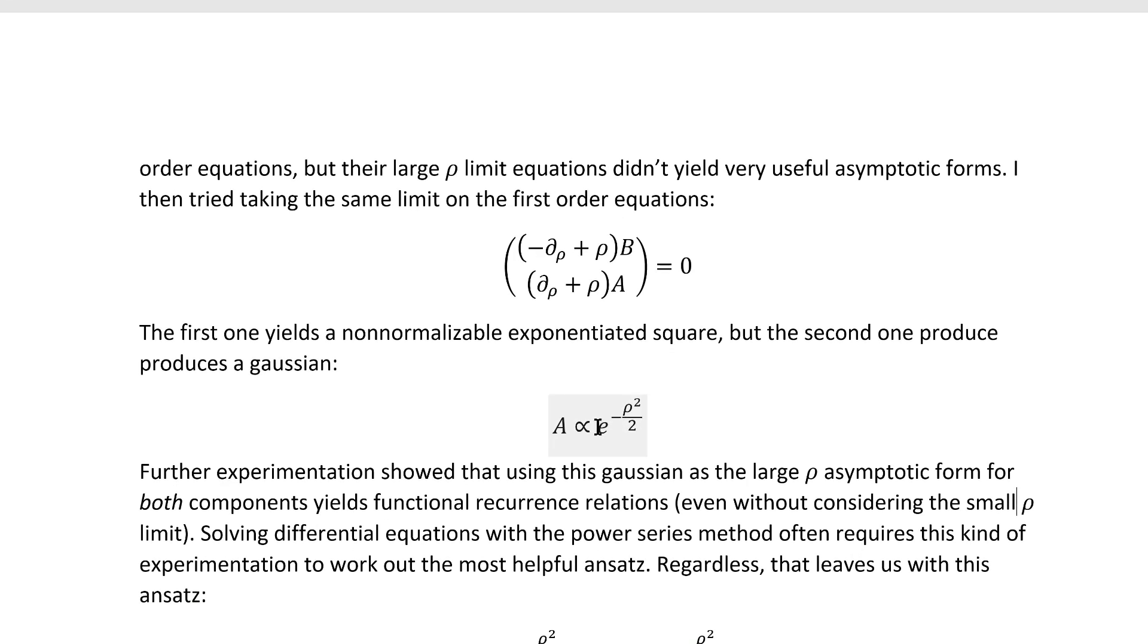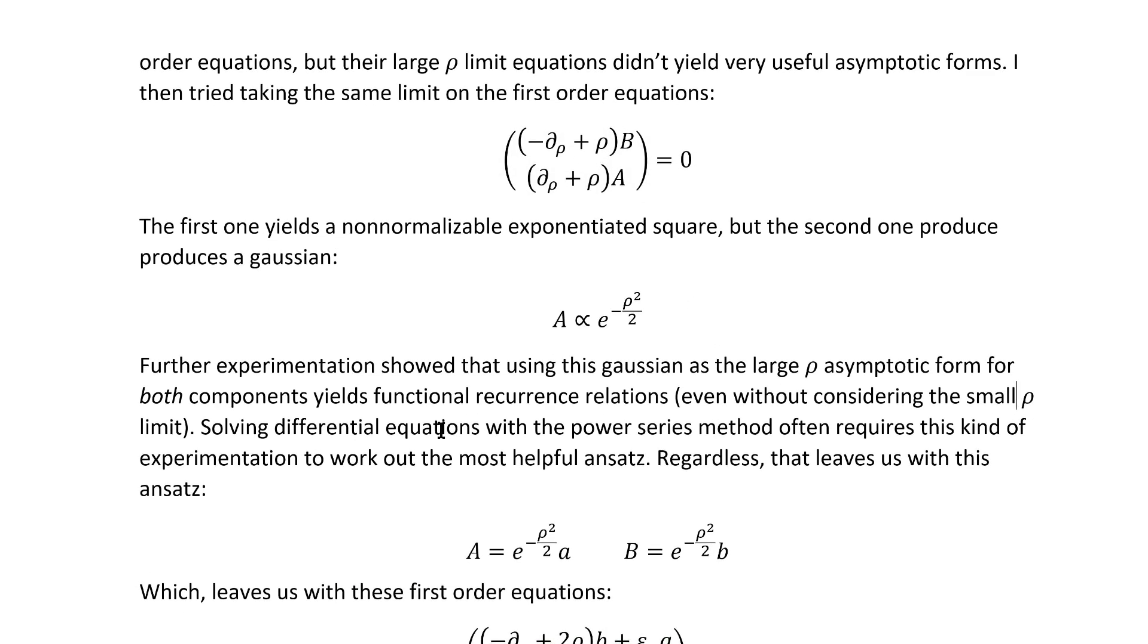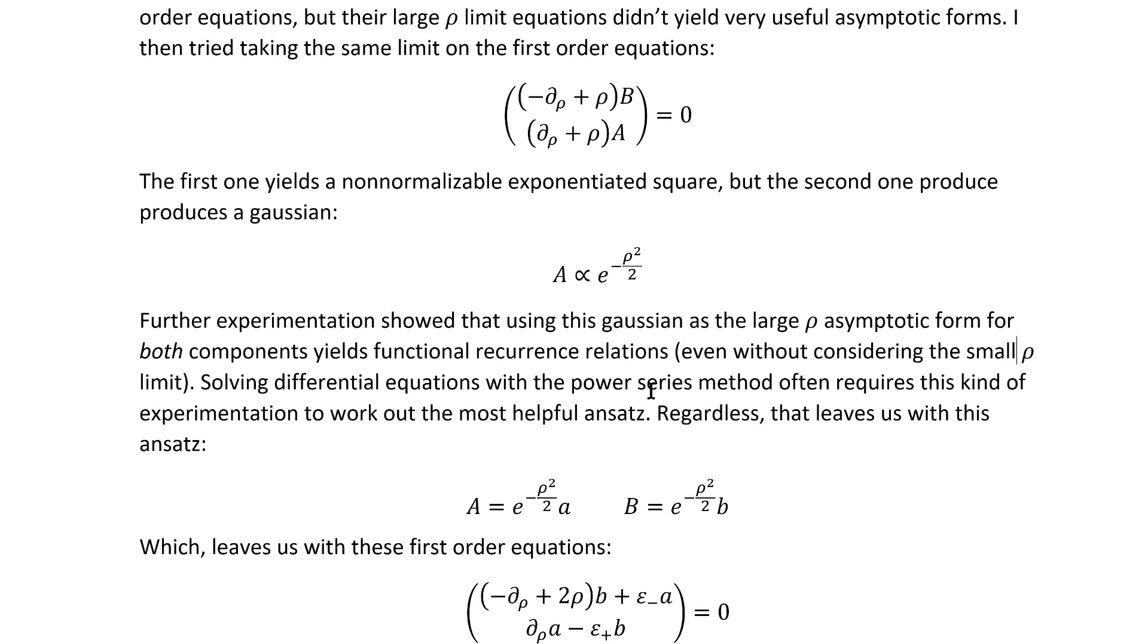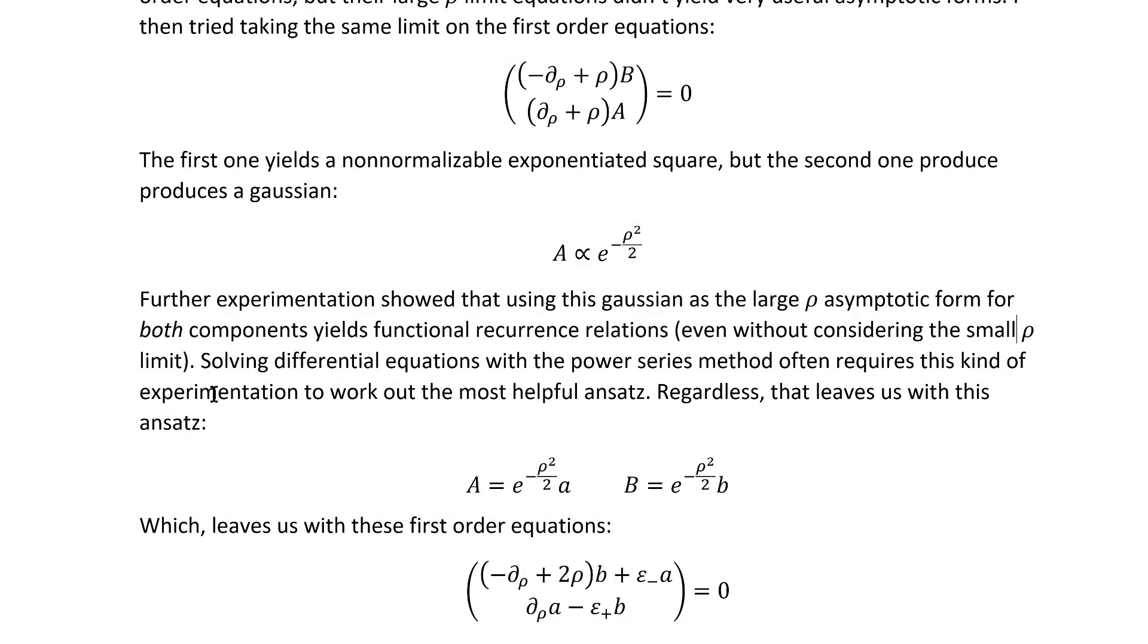One, which is an exponentiated positive square, is non-normalizable, and the other one is this nice normalizable Gaussian. I therefore only had one choice, and that was to try and use this as the asymptotic form for the large ρ limit of both components. Further experimentation confirmed that using this Gaussian as the large ρ asymptotic form for both components yielded functional recurrence relations, at least once we substituted to get second-order equations, even without considering a small-ρ limit. Sometimes you don't need an asymptotic form for the small-ρ limit. You kind of have to experiment to see exactly what asymptotic forms work and what ones you even need. That's all part of the game of solving differential equations via the power series method in the general case.